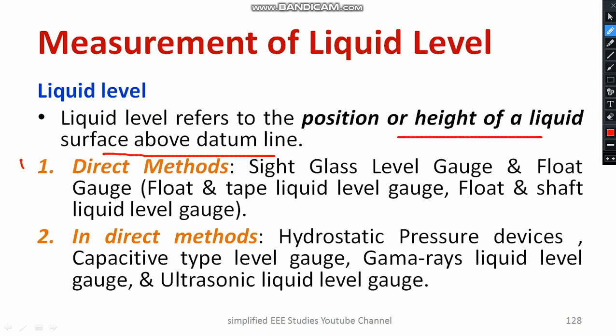Direct methods are applicable for checking the liquid level of less risky liquids. Different methods such as slide glass level gauge, float gauge, and float-and-shaft liquid level gauge are very popular for measurement of liquids that are less risky.